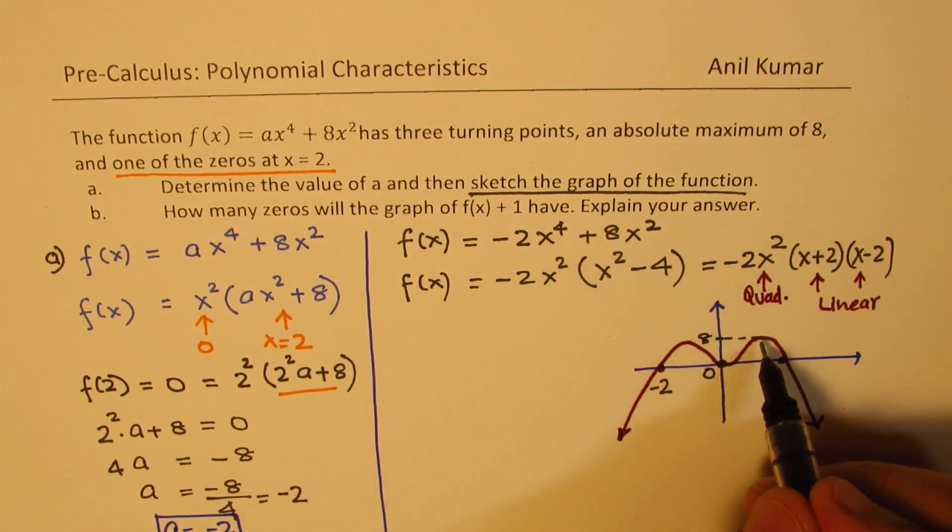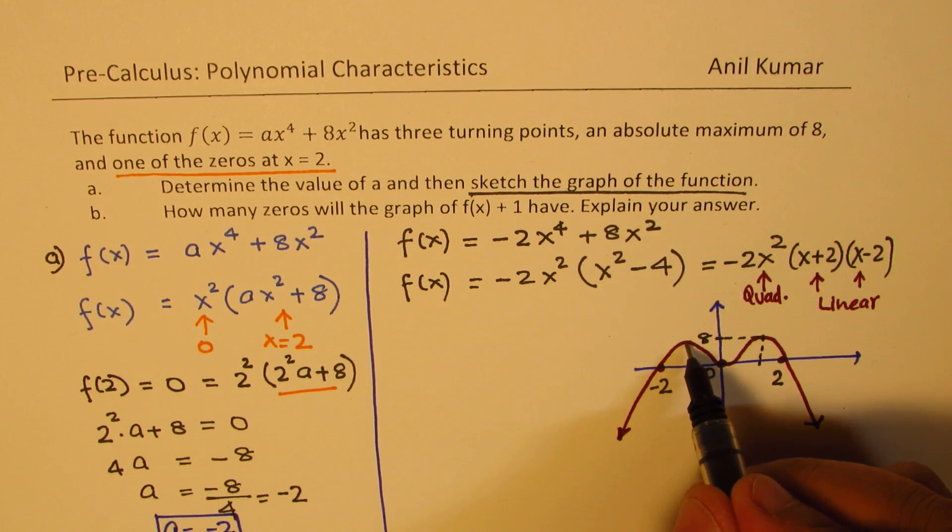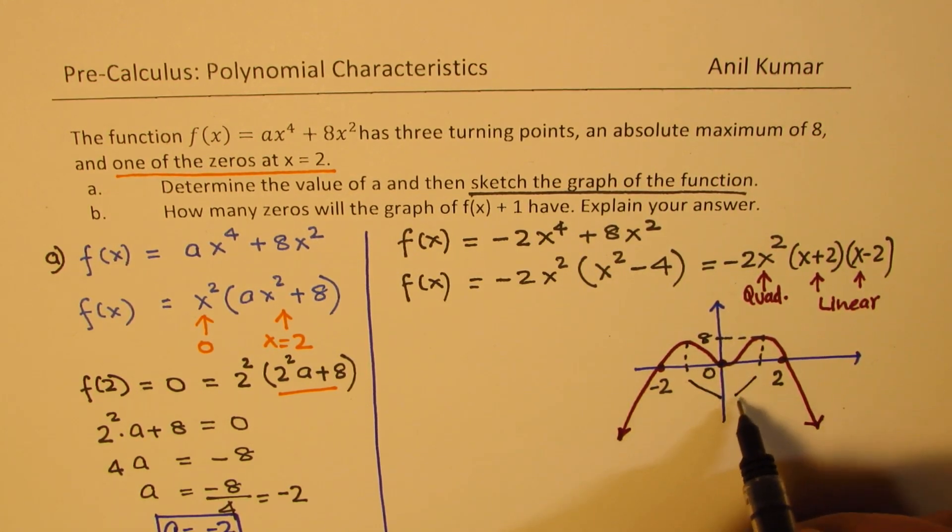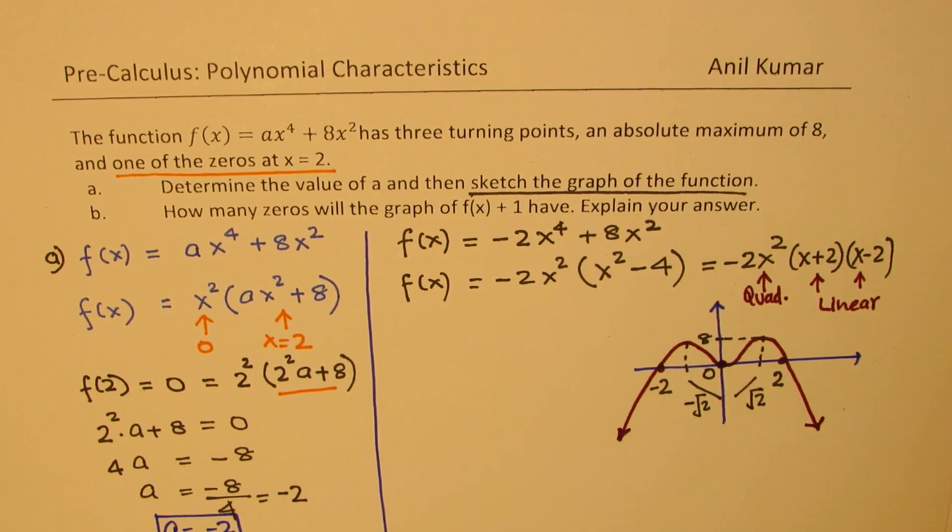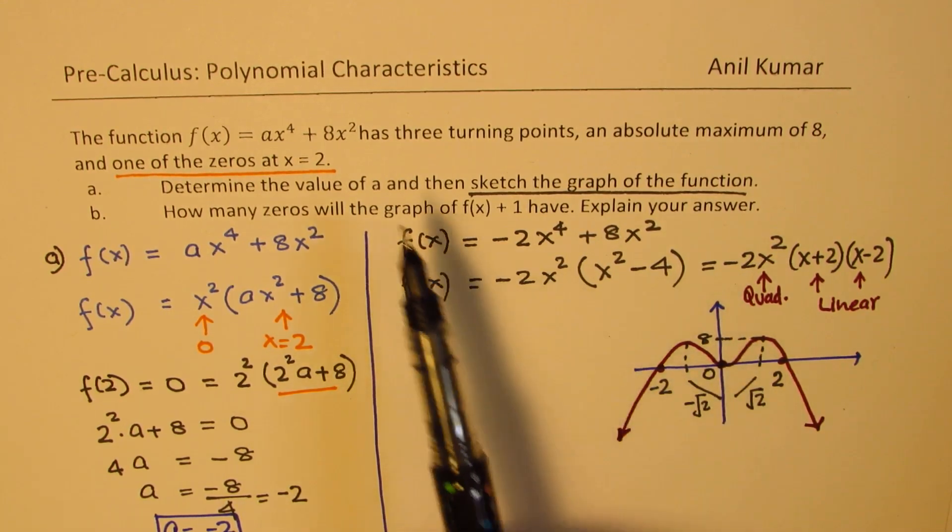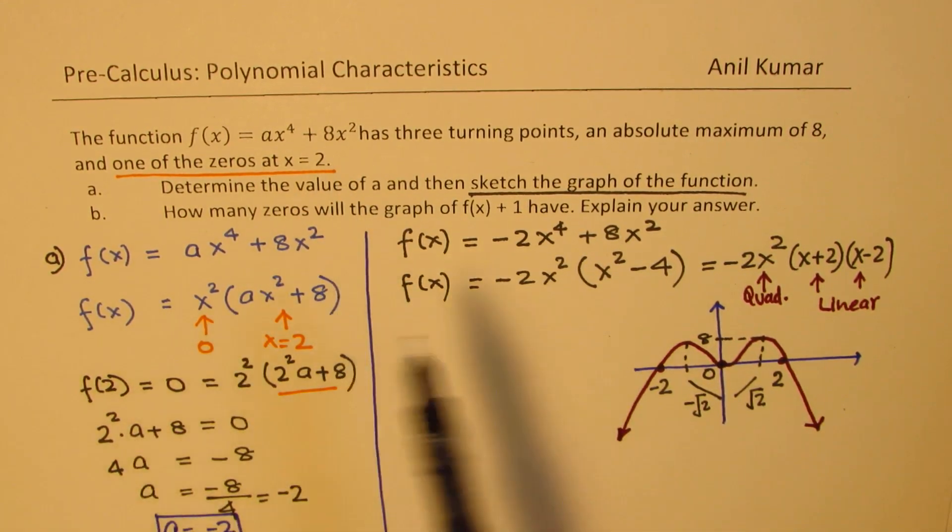If you figure out, then you will find that this maximum value occurs at plus and minus square root of 2. This will be minus square root of 2 and that will be at plus square root of 2. Anyway, we did find the function here which satisfied all the given conditions, and the value of a is minus 2 for us. So we are done with part A.